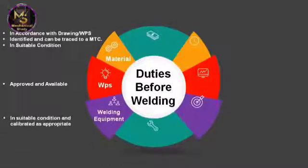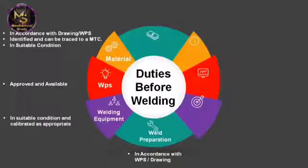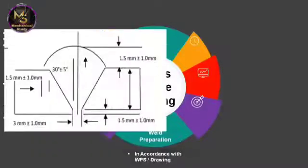Regarding welding equipment, if you are performing welding tasks on a machine that is out of calibration, it can create an environment where welder errors are possible. Before beginning work on a new welding process, you should have your machine calibrated. It is recommended that welding machines be calibrated annually to help avoid costly mistakes.